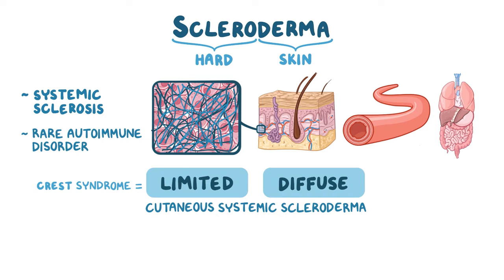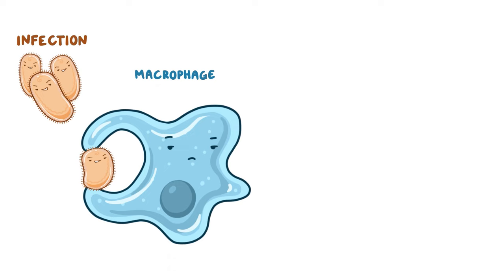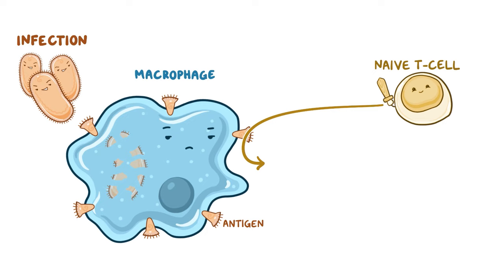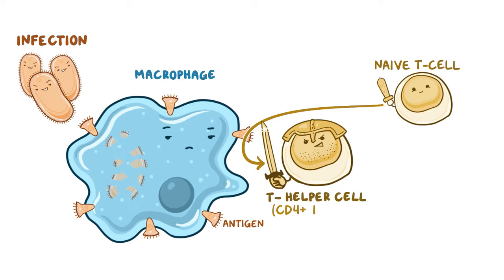Normally, when there is an infection in the body, macrophages will eat some of the invading organisms and break them down. In addition to destroying the pathogen, they also present a fragment of the pathogen, called an antigen, to naive T cells. When the naive T cells bind to this presented antigen, they mature into T helper cells, also called CD4 positive T cells.